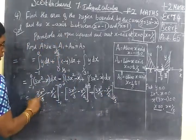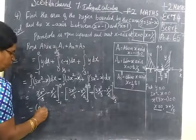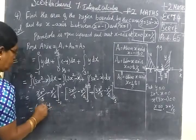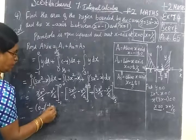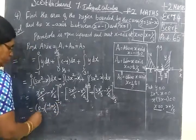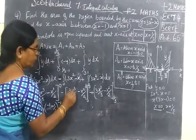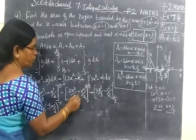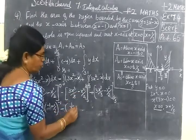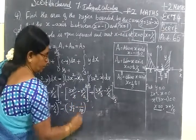Applying the limits: upper limit gives 0 minus lower limit. The lower limit at x = minus 1 gives (minus 1)³ minus (minus 1)²/2, which equals minus 1 minus 1/2. For the second part, 1/3 cubed is 1/27, and 1/3 squared is 1/9, giving 1/27 minus 1/18.